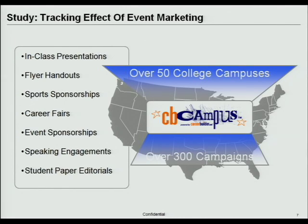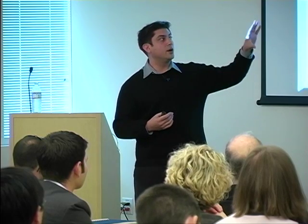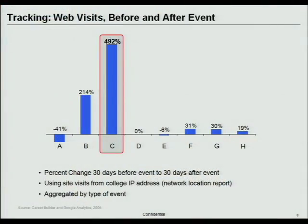We said: if you're going to these different campuses, each of them has an IP address. We can map the IP address with our network location report and see how much traffic is coming from each campus. We then looked at all the different event marketing they did, examined before and after from the time of the event, aggregated them together, and got a chart mapping from 30 days before to 30 days after — showing the percentage lift in traffic due to these events.